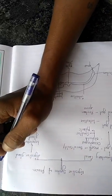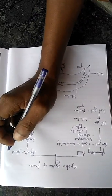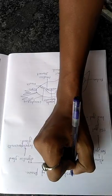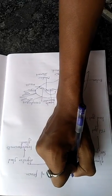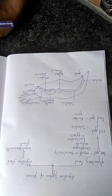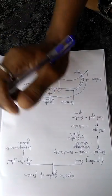Today I am going to study the digestive system of prawn. The digestive system of prawn consists of alimentary canal and digestive gland.